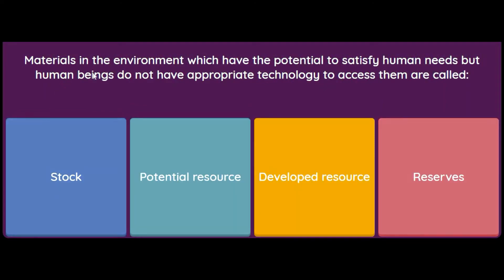Materials in the environment which have the potential to satisfy human needs, but human beings do not have the appropriate technology to access them, are called: stock, potential resource, developed resource, or reserves? The answer is stock.